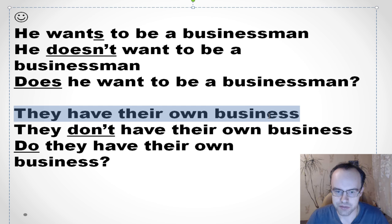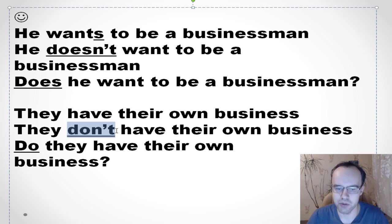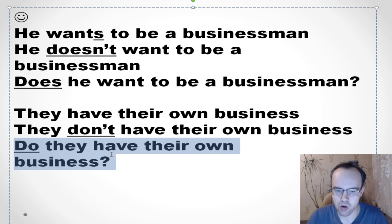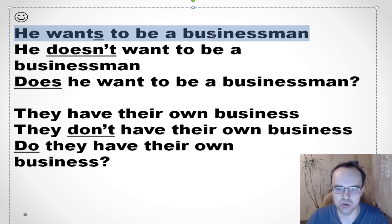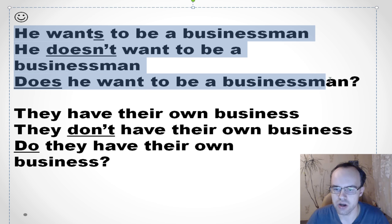Look at this: 'They have their own business.' How will you make a negative form? You put 'don't' before 'have' because of 'they' — 'They don't have their own business.' And if you want to ask a question, you use 'do' — 'Do they have their own business?' This exercise is very useful — you can choose one sentence, make a negative form, and ask a question.